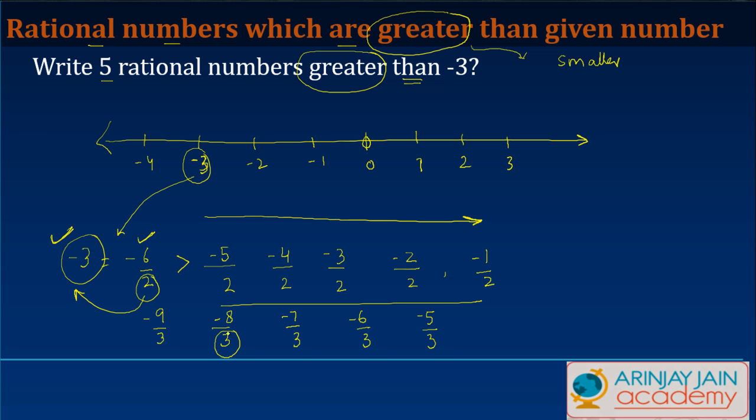If the denominator is 3, any numerator which is greater than -9 will make the fraction greater than -3. And that's how you resolve it.